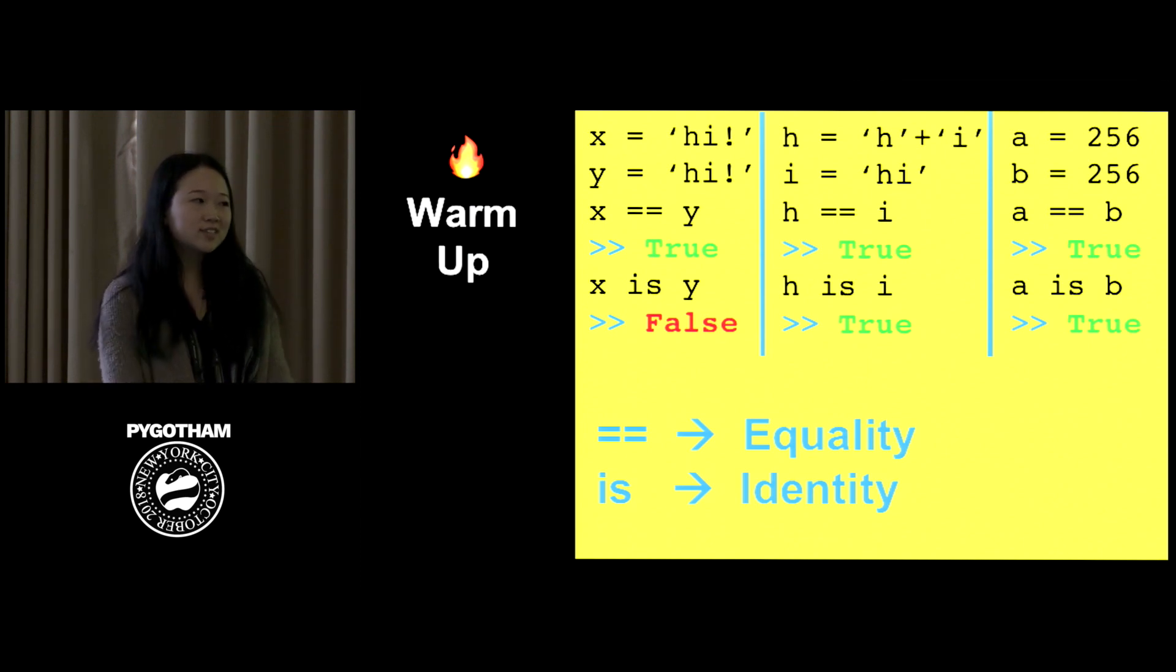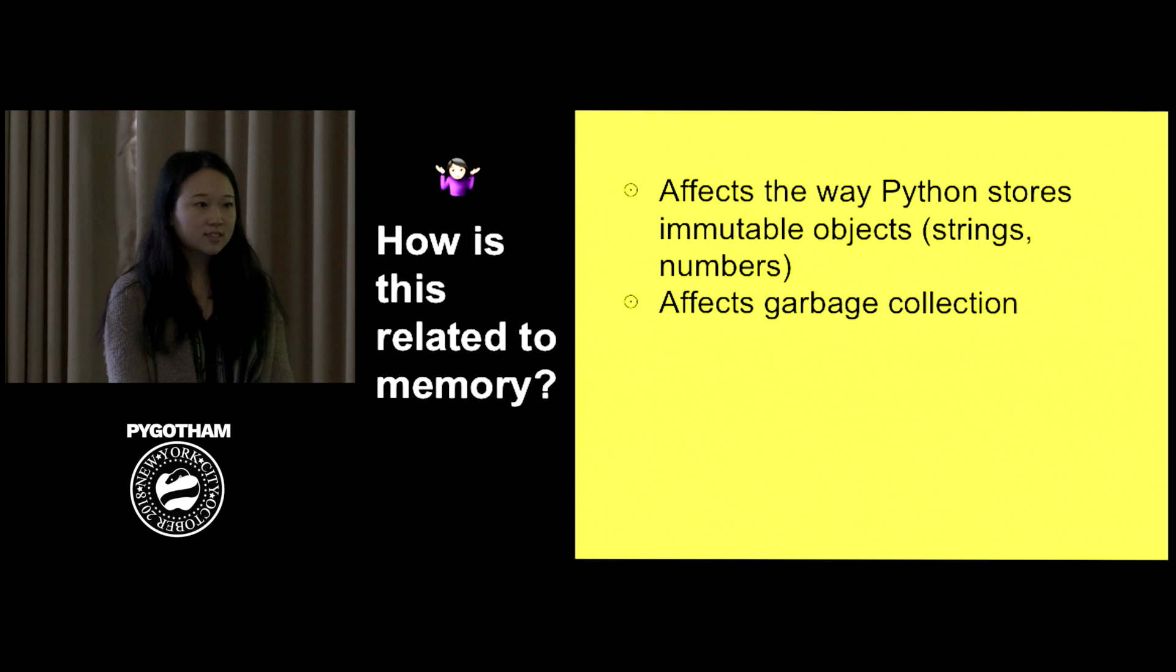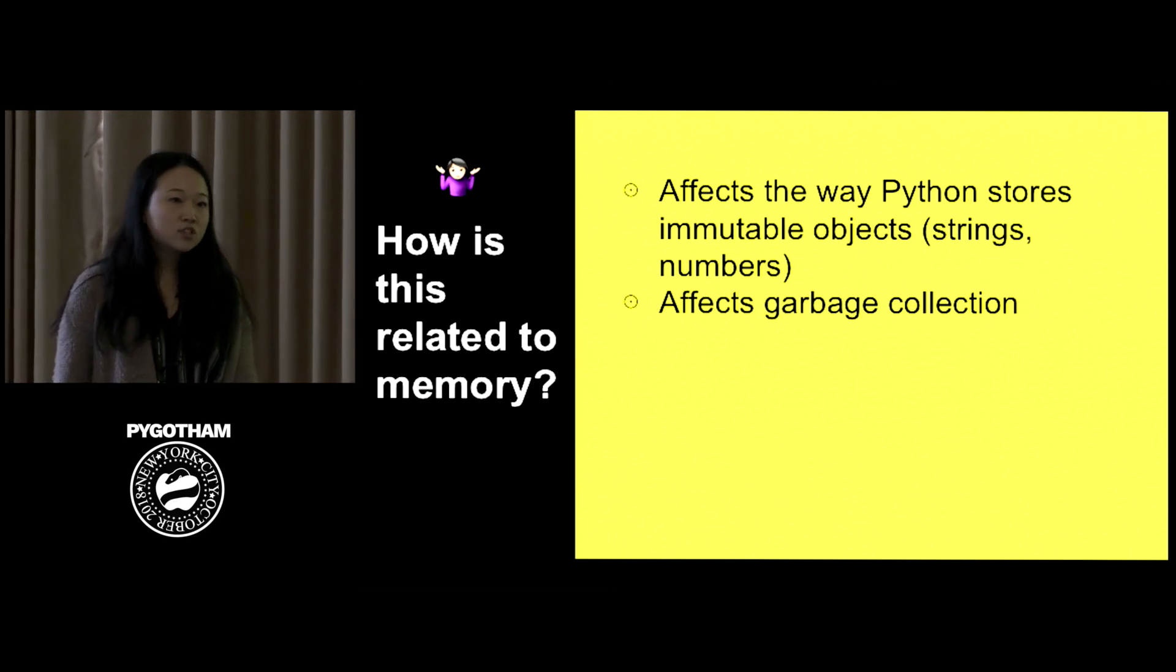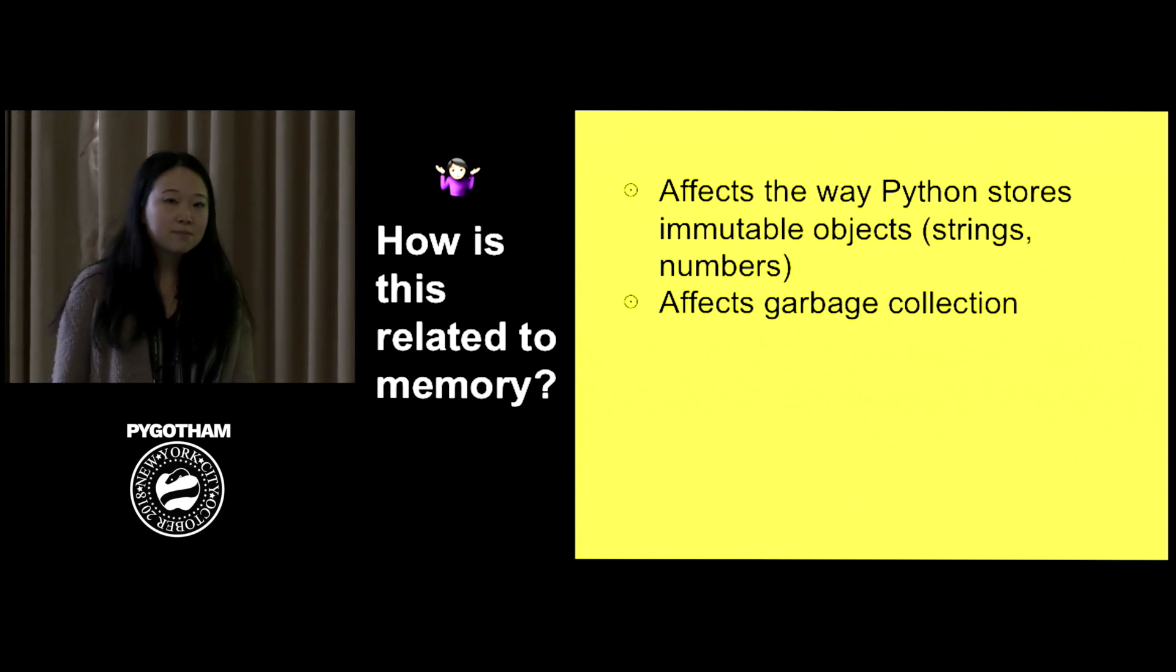Another question you may have is what does this have to do with memory in the first place? The point of the last slide you saw was to show you the way that Python manages memory or just manages different strings and integers is not the most intuitive. And this ultimately affects how Python stores objects, and it also affects garbage collection or how Python is going to clean up memory. So throughout this presentation, I'll be focusing on these two concepts. This may be interesting to you if you've ever wondered what's going on behind the scenes, or have wondered why your program has spikes in memories from time to time.